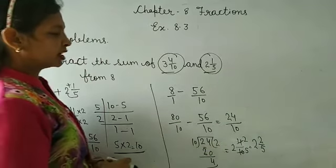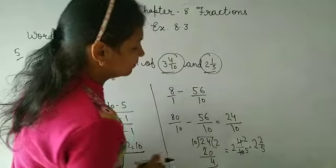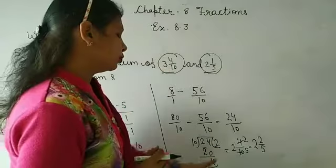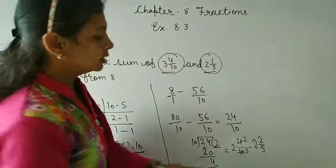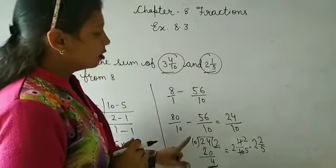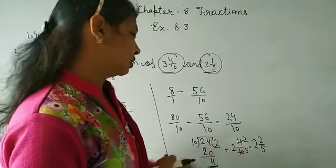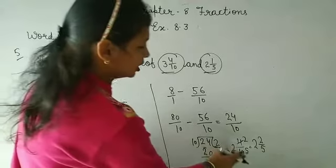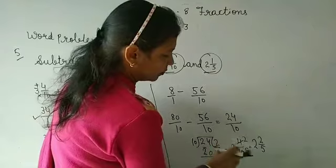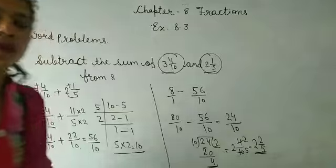Now we convert to mixed fraction. Divide 24 by 10. 10 into 24 goes 2 times with remainder 4. The quotient goes as the whole number, numerator is the remainder, denominator stays the same: 4 upon 10. 4 and 10 can both be divided by 2, so we cut it: 2 upon 5. The answer is 2 and 2 upon 5.